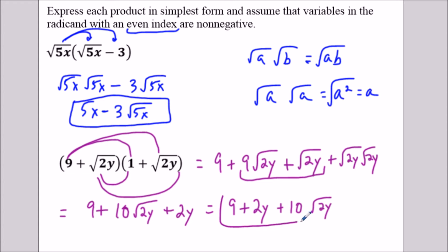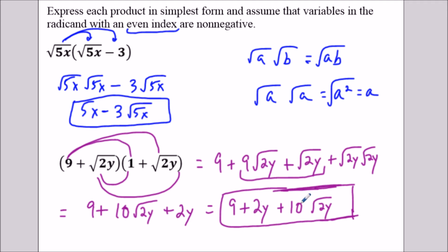Don't make the mistake of adding non-like terms — that's common in these questions. For example, don't say 9 plus 2y is 11y, or 2y plus 10 radical 2y is something like 12y radical 2y. None of these terms match, so we have to stop here.